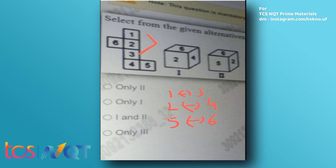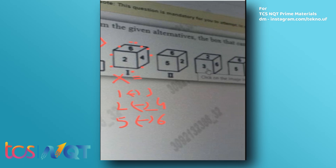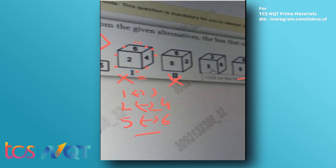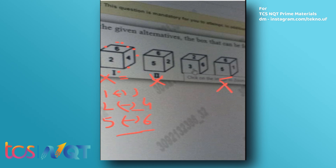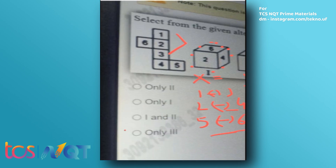The opposite elements cannot be visible on the same die at the same time. As you can see, two and four are opposite but appear together in one option — so that is eliminated. In another option, five and six appear together — eliminated, since five and six are opposite. In another option, one and five and six appear — five and six are opposite, so that is also eliminated. Only the third option remains, so three is the correct answer.